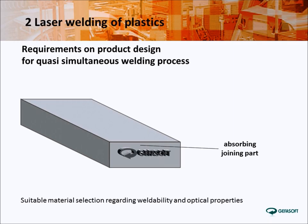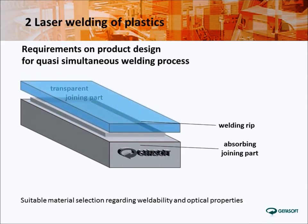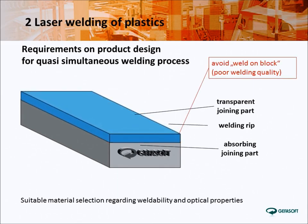Besides the material selection, several requirements on the product design need to be considered. The absorbing joint partner consists of a suitable base material and additives or pigments fitting to the used laser wavelength — in the most simple case, this pigment is just carbon. The absorbing joint partner contains a welding rib to allow the force introduction into the welding contour and make a welding seam possible. In the ideal case, the transparent joining partner consists of the base material only and, if necessary, a laser transparent additive. Depending on the material, fillers, and additives, the wall thickness at the welding area is restricted to a certain limit. A welding on block should be avoided, because this reduces the quality of the welding joint significantly.